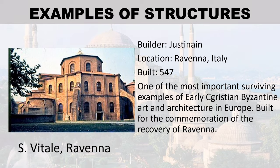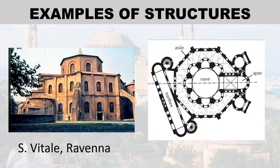San Vitale, Ravenna — built by Justinian, located in Ravenna, Italy, approximately built in 547 CE. This structure is one of the most important surviving examples of early Christian Byzantine art and architecture in Europe, built to commemorate the recovery of Ravenna.